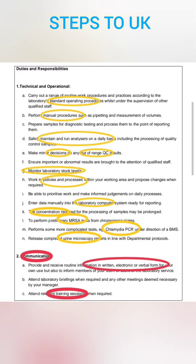In section A, they are looking for a person who knows the standard operating procedure, which means SOP. Candidates should follow SOP — that's what they need. The next one is manual procedure, and manual procedure means they are looking for a person with high manual dexterity. When we come to section D, they said they maintain and run analyzers on a daily basis, which means candidates should know how to run the QCs and how to make decisions if QC results are out of range.